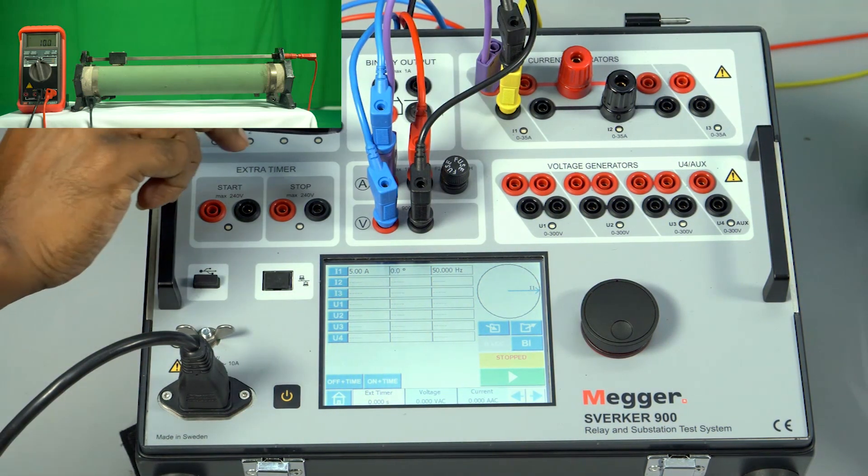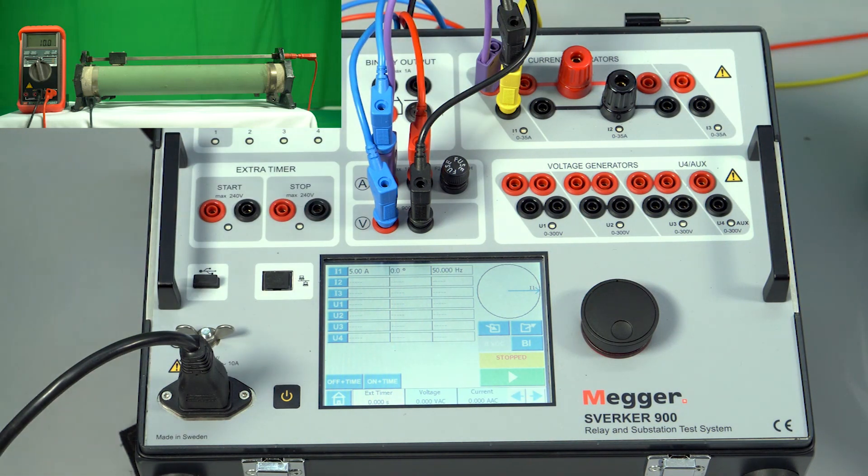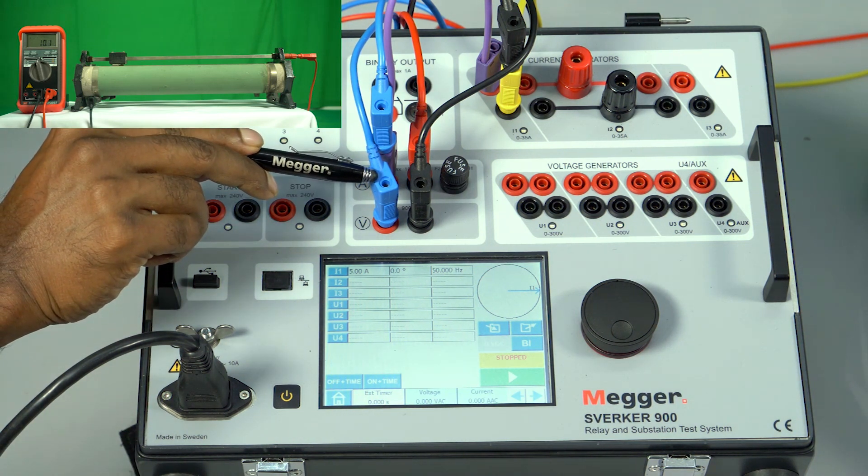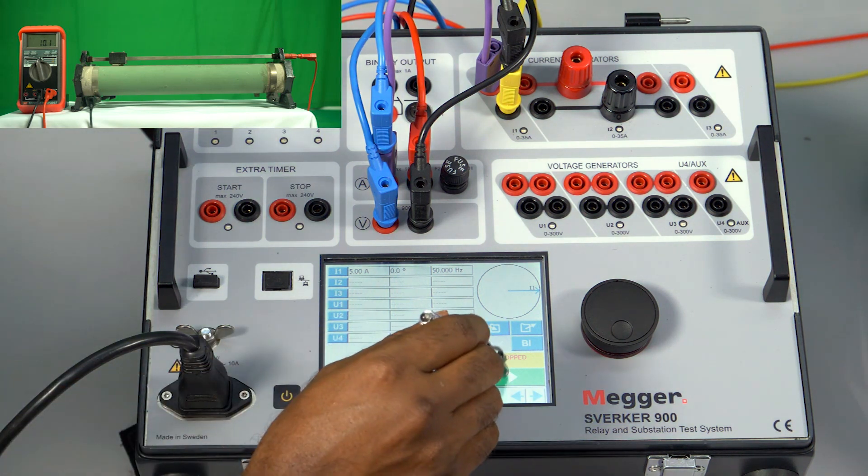The CT in series with the ammeter and the current is directly connected to the rheostat which is also connected in parallel to the voltmeter to verify the compliance voltage. Now let me inject 5 amps and stop the injection.